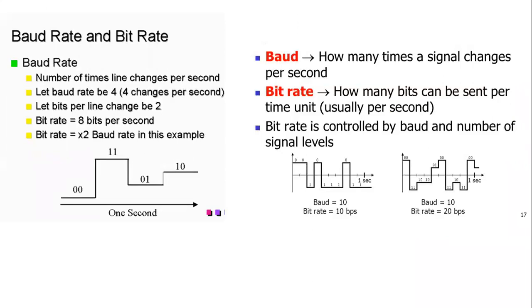Bit rate is how many bits can be sent per second. Baud rate is the number of times a change has happened — that is, the transitions from 0 to 1 or 1 to 0. Baud rate plays an important role because every time a change happens from 0 to 1, there is a possibility of noise being added. But since we have digital data, we can remove the noise. This shift from one set of bits to another is called baud rate and must be taken care of in the transmission channel.